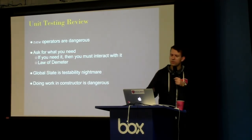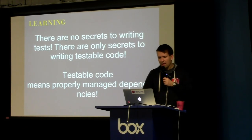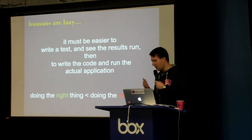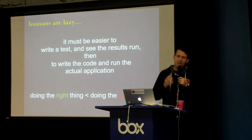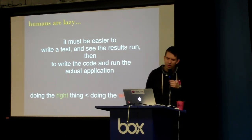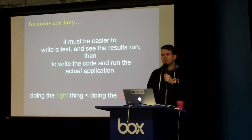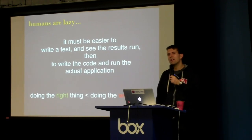In review: new operators are dangerous, ask for what you need, don't do Law of Demeter violations, global state is a nightmare, and doing work in the constructor is too. The trick to getting everybody on the team to do the right thing is simply setting up their environment so that doing the right thing is easier than doing the wrong thing. I come to projects and they say show me how you launch the product, and it takes half an hour to build and 20 minutes to launch. Right there you're making life difficult for everybody — it would be worth the time for somebody to figure out how to just make developers' lives easier.